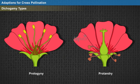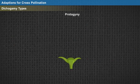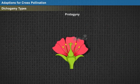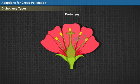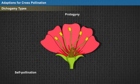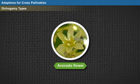Dichogamy is of two types: protogymy and protandry. Protogymy refers to the condition of bisexual flowers where the carpel matures before the stamens. By the time the stamens get matured, the carpels are already dead, so self-pollination is never possible and reproduction occurs only through cross-pollination. Avocado flowers fall under this category.